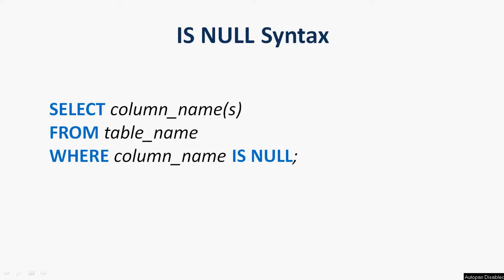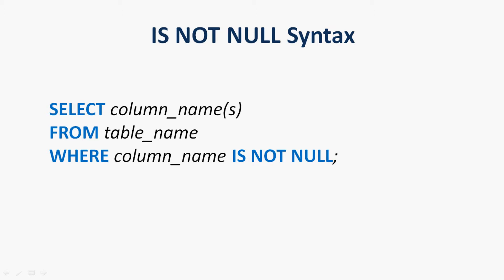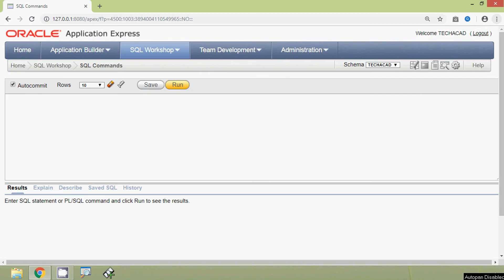Here we can see the syntax for the IS NULL operator: SELECT column names FROM table name WHERE column name IS NULL. And here we can see the syntax for IS NOT NULL: SELECT column names FROM table name WHERE column name IS NOT NULL. We will see some examples instead of just theory so that it will be more clear.